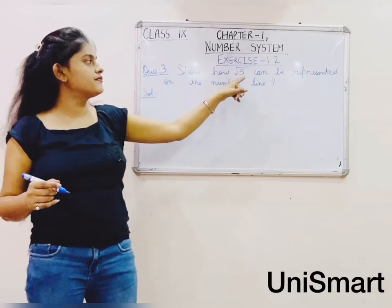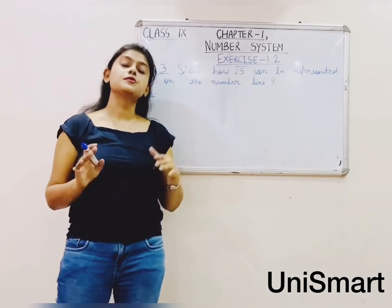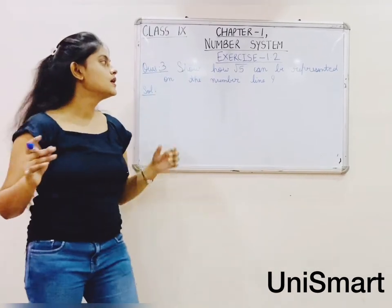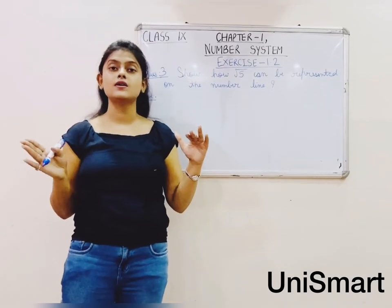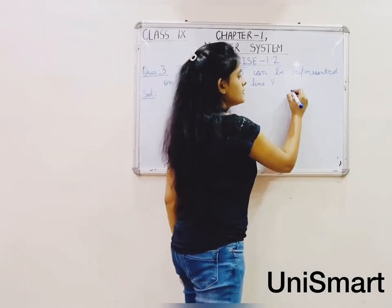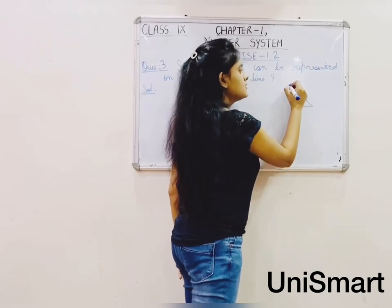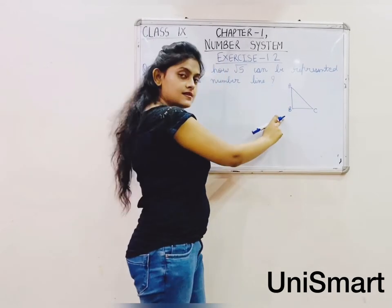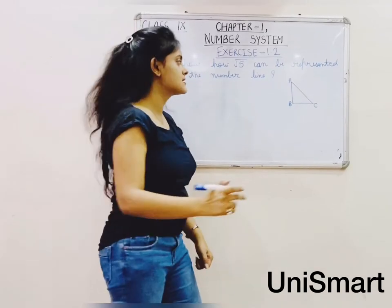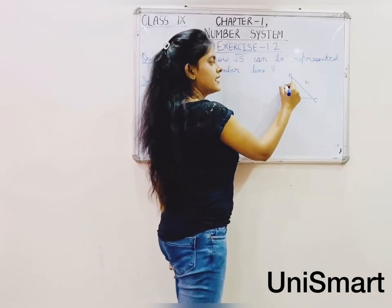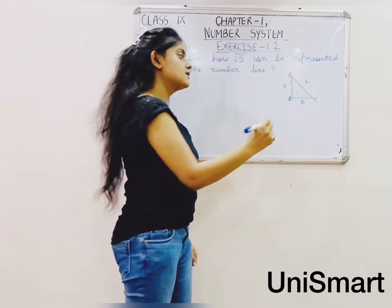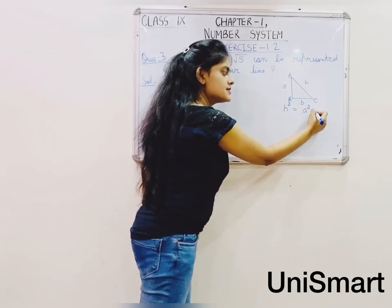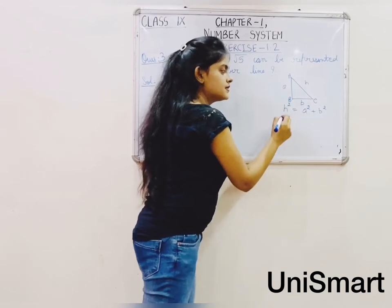Moving to Question 3: show how root 5 can be represented on the number line. I've shown you how to represent root 2; now I'll show root 5. We create a right angle triangle ABC, where AC is the hypotenuse, AB is the perpendicular, and BC is the base. AC is H, AB is A, and BC is B. By Pythagoras theorem, H squared equals perpendicular squared plus base squared.